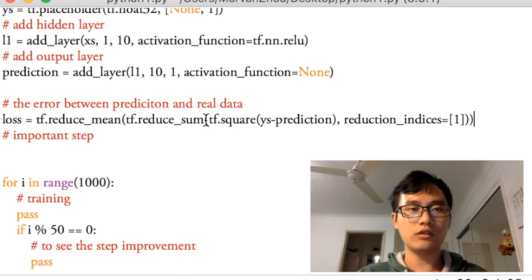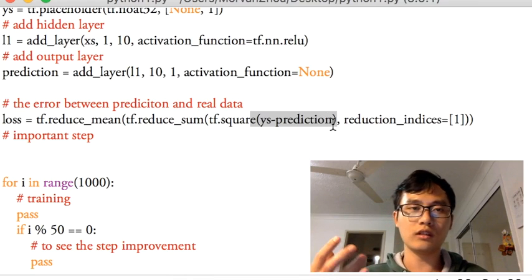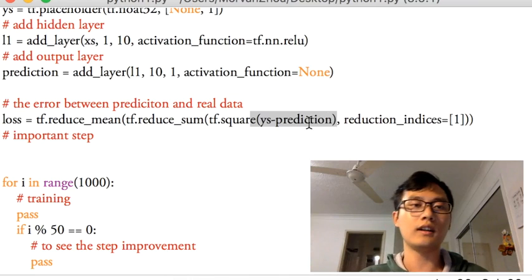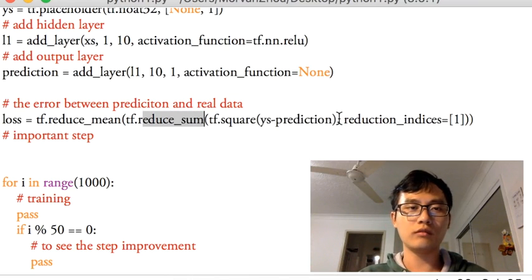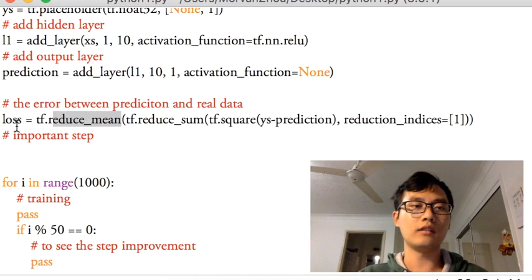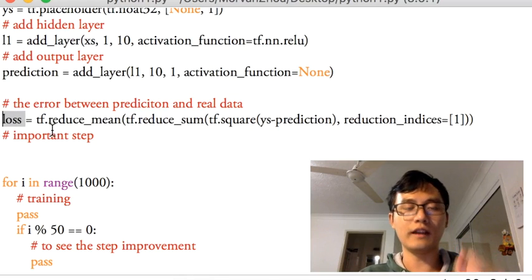This loss is to compute the square error of my prediction, the difference between the prediction and real data, and sum all the samples together. And take the mean value of those samples, then return this loss. This one is a single value, so this is the loss for all samples and all features.